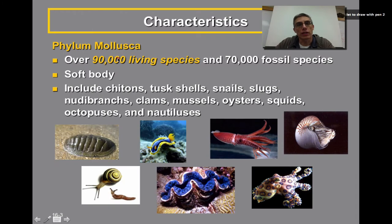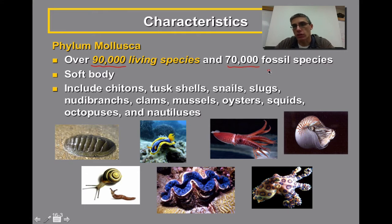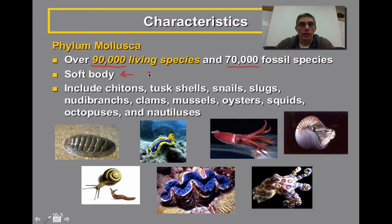The phylum Mollusca is considered a very diverse and large group of animals. In fact, it contains over 90,000 living species, and there have been over 70,000 fossil species discovered up to this point. One of the unique characteristics of these animals is that they have a very soft body. When you're an animal with a very soft body, you need to find a way to protect that body, and what most of these animals will have is a shell that works to protect that soft tissue.